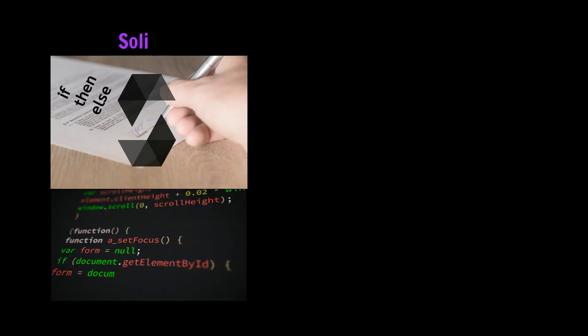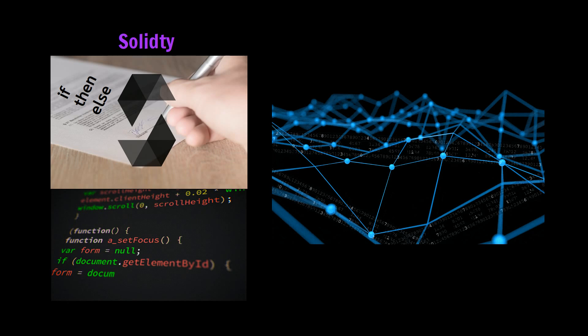Think about it — what is a contract? A contract is basically a bunch of conditional statements. To implement them, you need a programming language called Solidity. So you use Solidity to write a smart contract, then you deploy it to the Ethereum decentralized network.